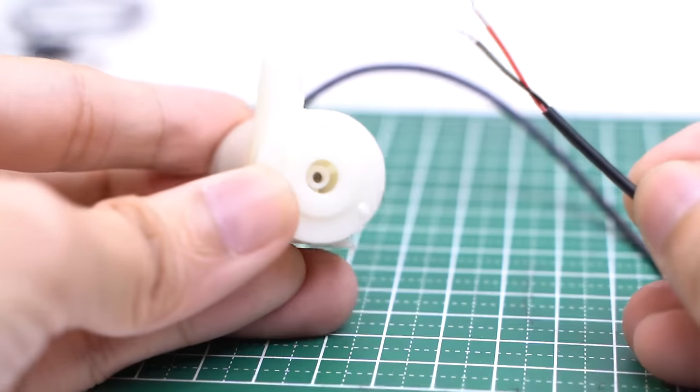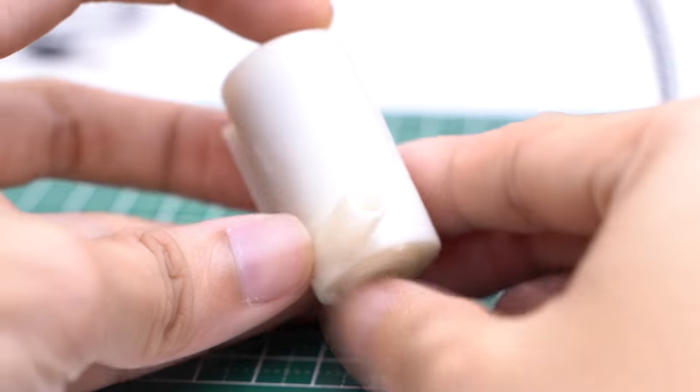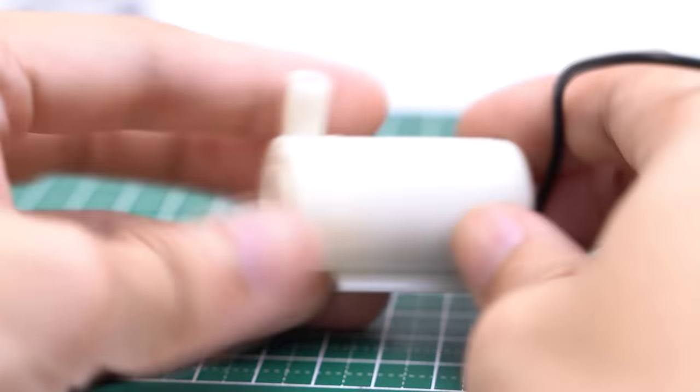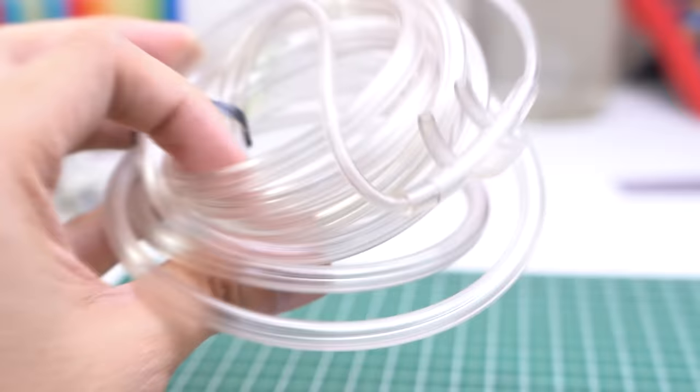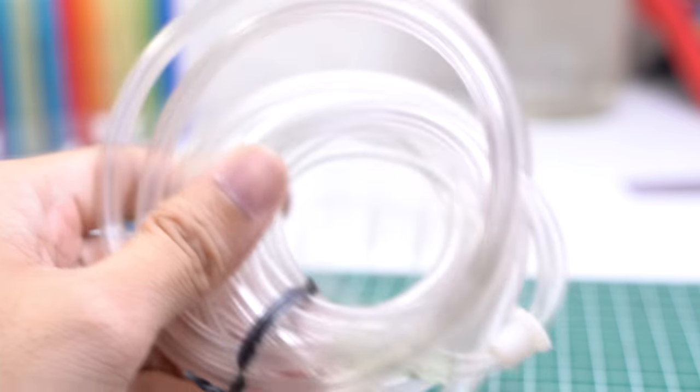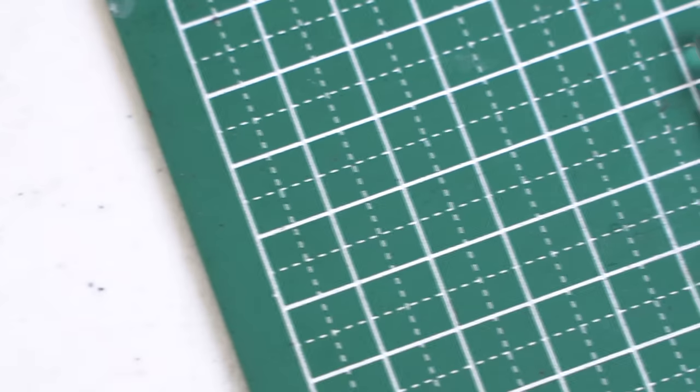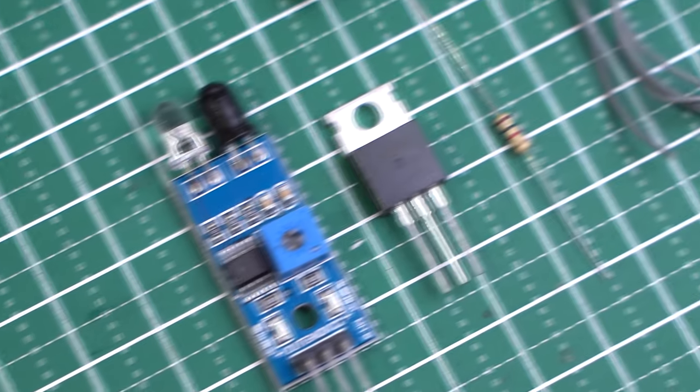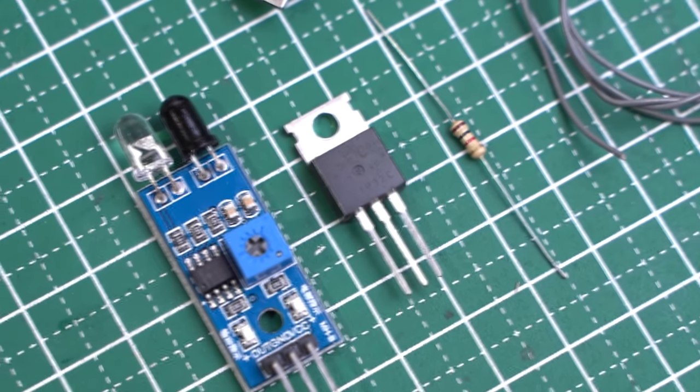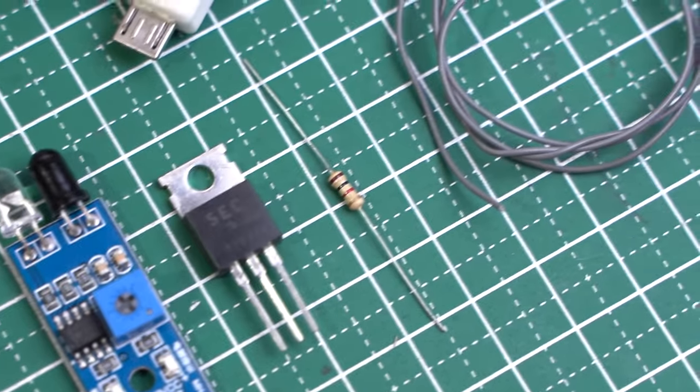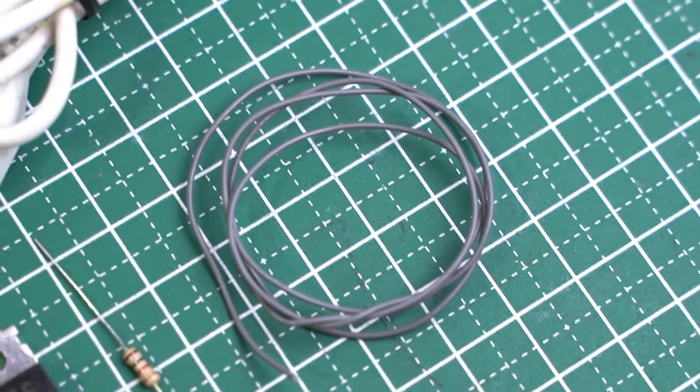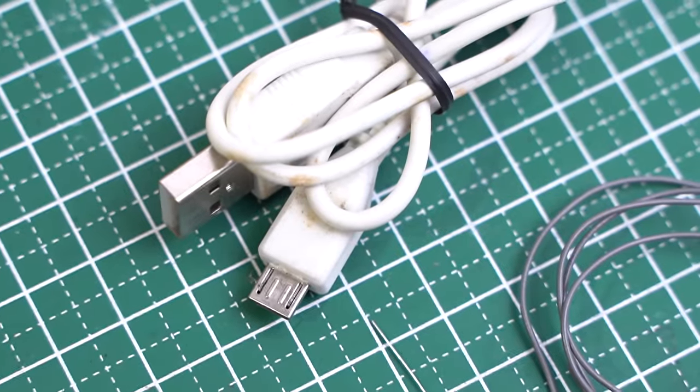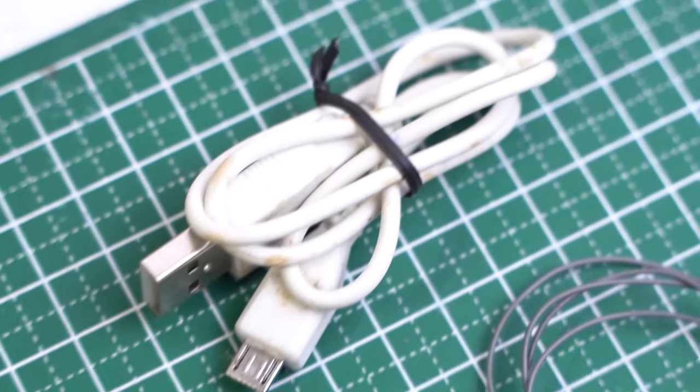For this project, you'll need a DC water pump, which you can buy online for less than $2, some aquarium tubing, a proximity sensor module for $1, a TIP32C PNP transistor, a 1kΩ resistor, some wires, and an extra USB cable—yes, the cheap cables that come with your power bank for free.